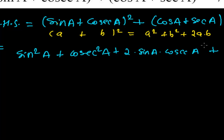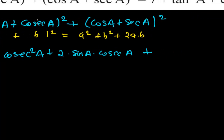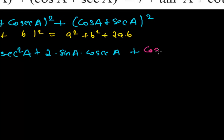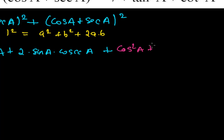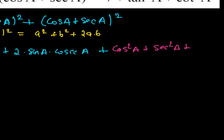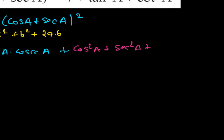And again I am going to apply the same formula (a + b)² to the second term, giving: cos²a + sec²a + 2·cos a·sec a.